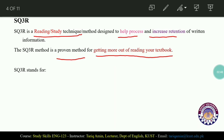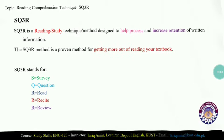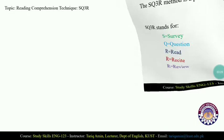SQ3R stands for: S — Survey, Q — Question, and 3R — Read, Recite, and Review. These are three different R's, which is why it is called SQ3R. SQ3R consists of the following five steps.